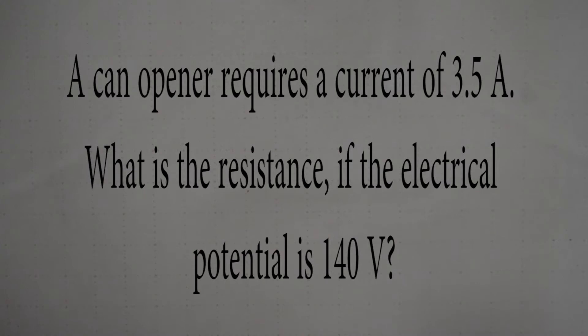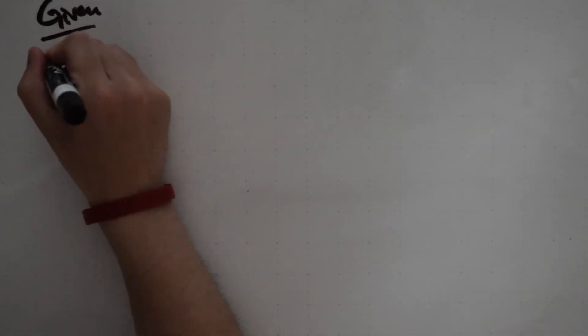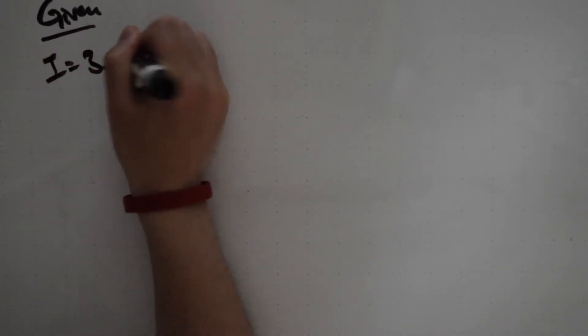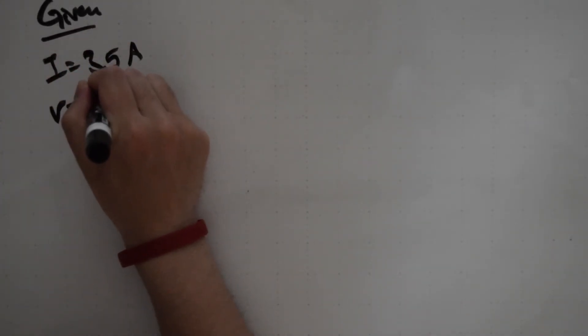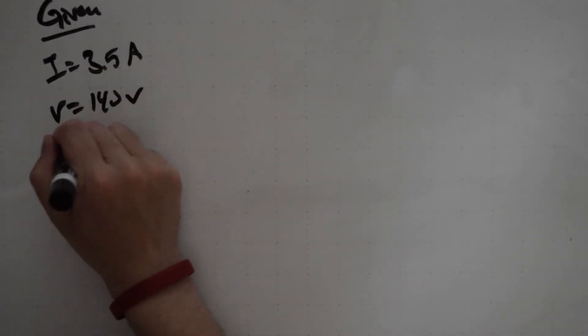Our third question states that a can opener requires a current of 3.5 amps. What is the resistance if the electrical potential is 140 volts? If we list our givens, we can see that I equals 3.5 and V is 140, which means we're solving for R.